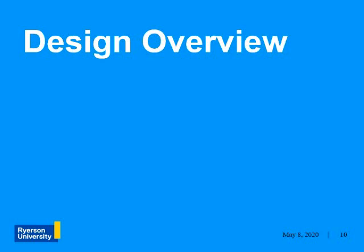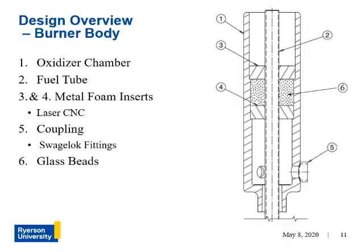In the next section we will cover the design overview. This diagram shows the cross section of the burner body, which will be made up of the following components. Number one is the outer tube which encloses the oxidizer chamber. The second component is the fuel tube, which will have a chamfered edge along the top to allow for a smooth transition in the flow field. Items three and four are porous metal foam inserts, between which would be filled with glass beads marked as number six. Together, this creates a filter to eliminate swirling and turbulence created at the oxidizer inlets.